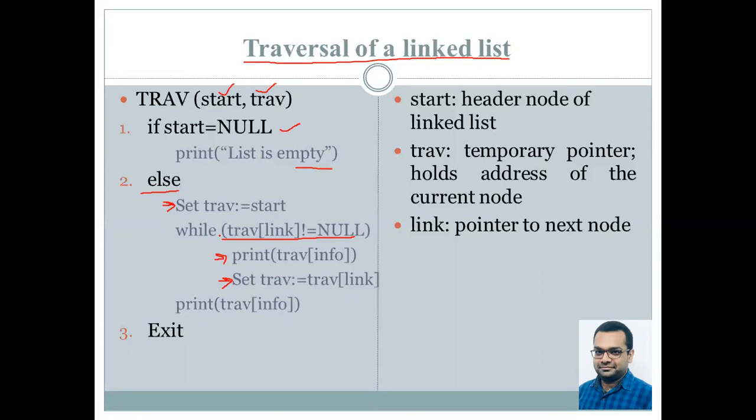As soon as our program reaches the last node, this check in the while loop is going to be false. Therefore, we have to print the value in the last node by using this print statement, and then our control exits. You could have simply used traversal not equal to null here, and we would not have required this statement.